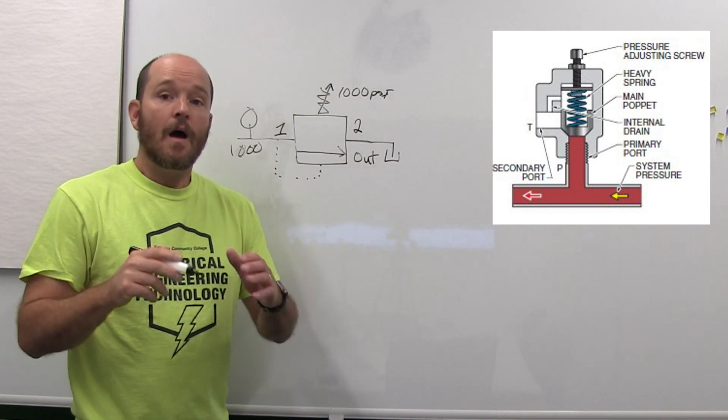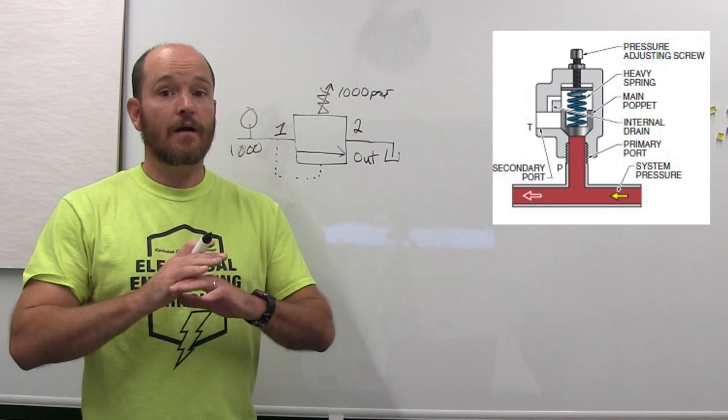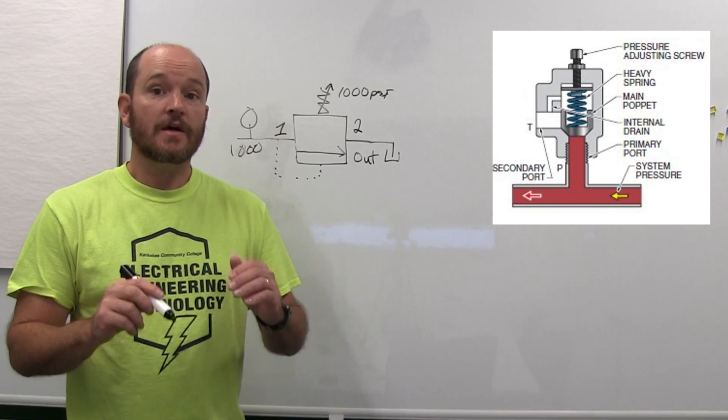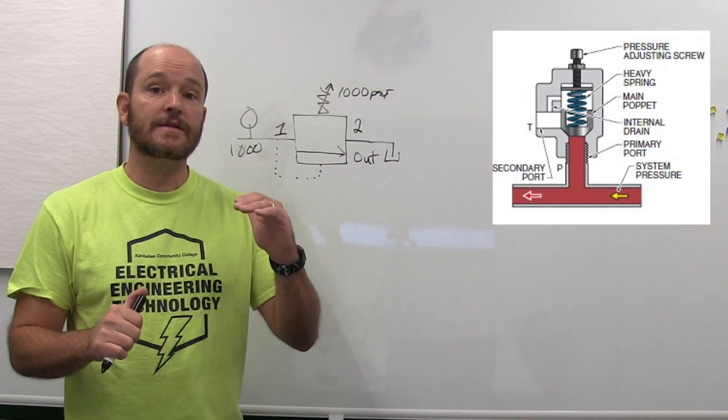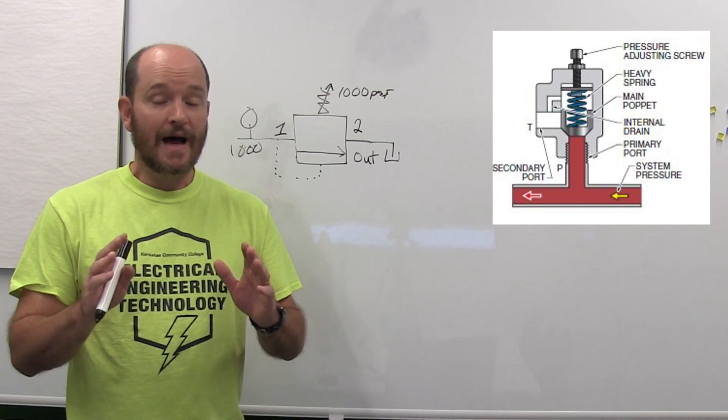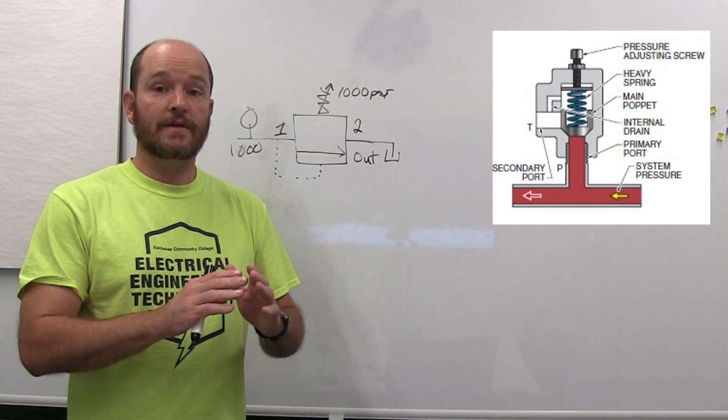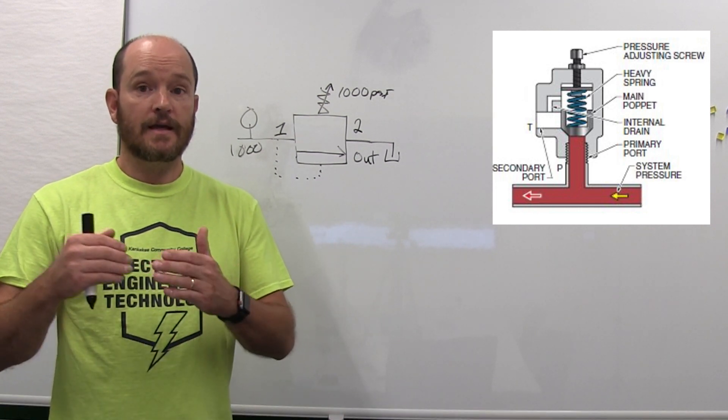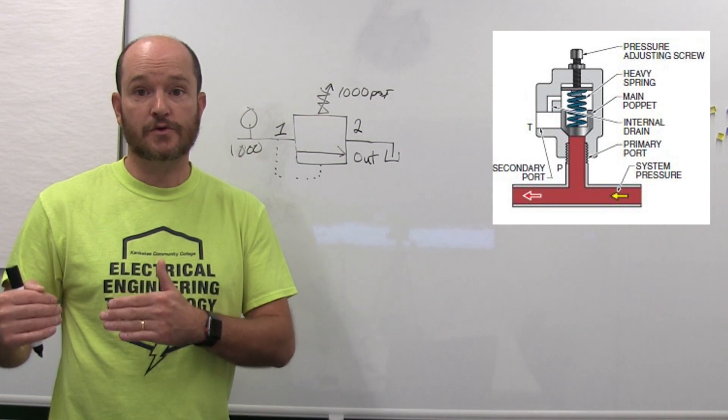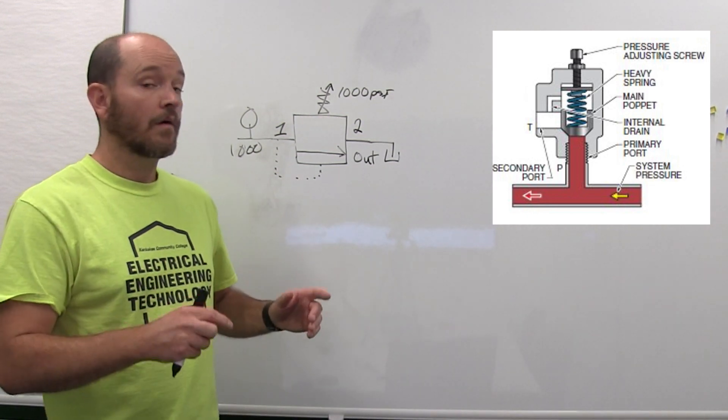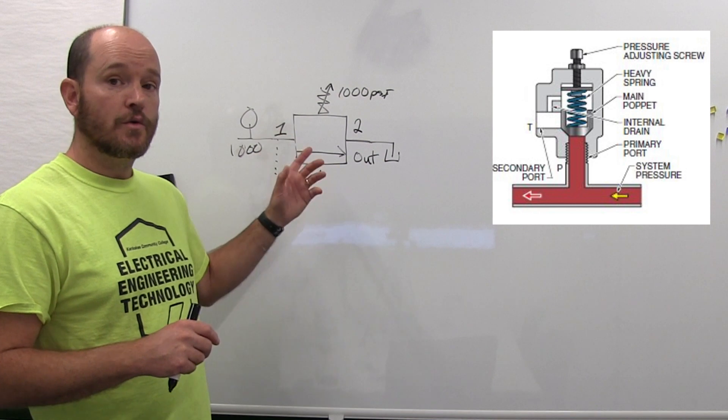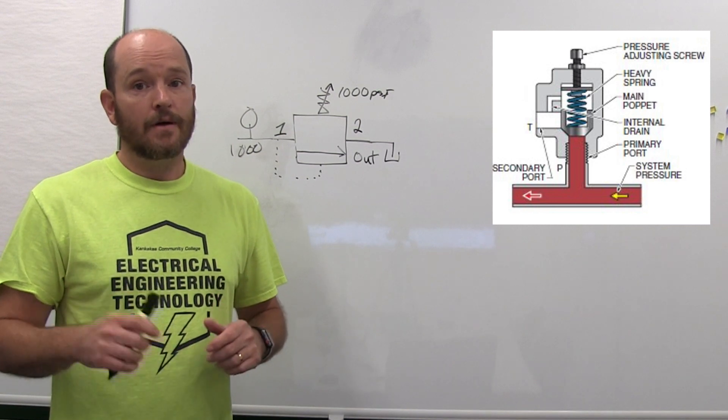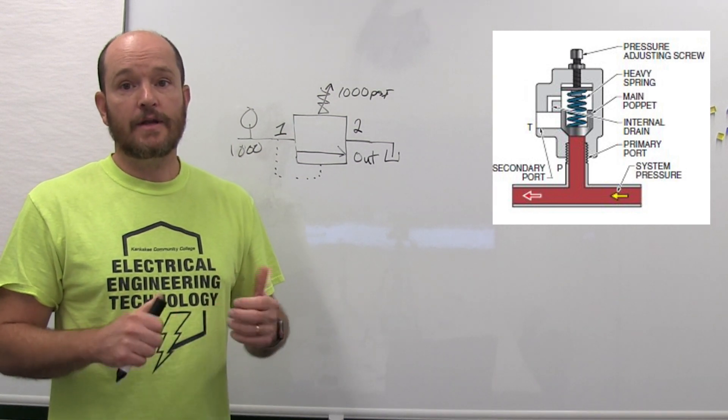Most if not all hydraulic systems require a pressure relief valve to set the maximum resistance in the system. Without one or if they go bad, you're either going to burn the pump out, the motor is going to pull more current than its protective devices can handle, or worst case scenario you could burst a hose that could cause damage to equipment.